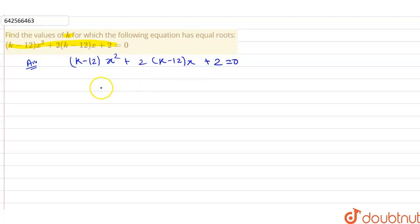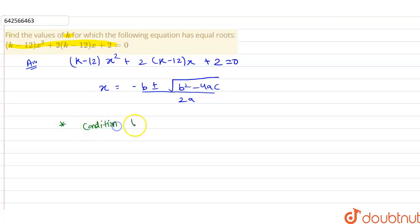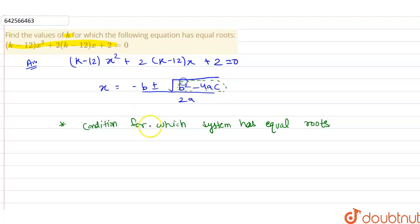We know that the formula for calculating the roots of a quadratic equation is x equals minus b plus or minus root over b squared minus 4ac, divided by 2a. Now the condition for which the equation has equal roots is when b squared minus 4ac equals zero. At that condition we can say that the equation has equal roots.